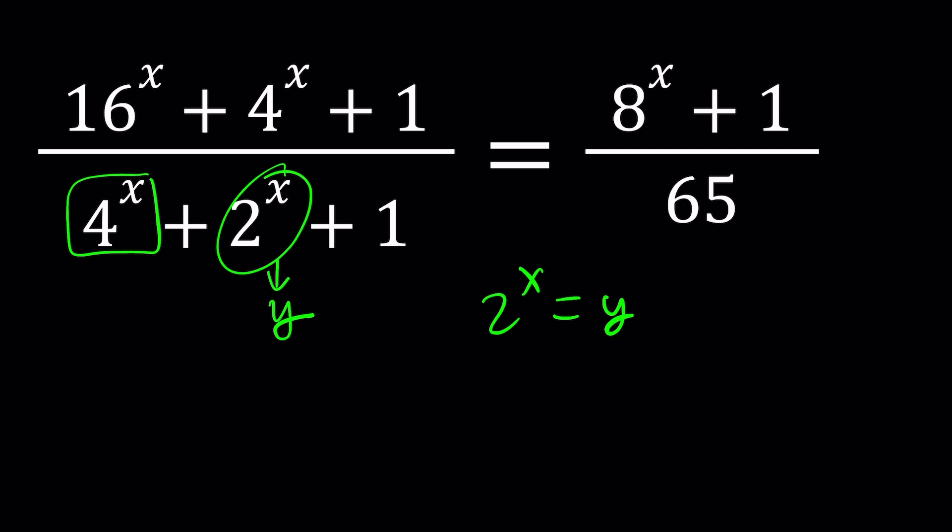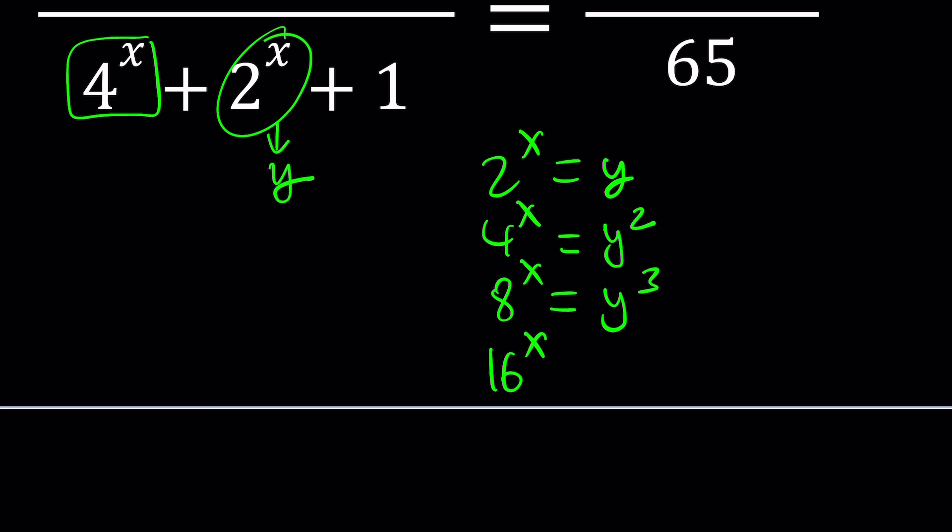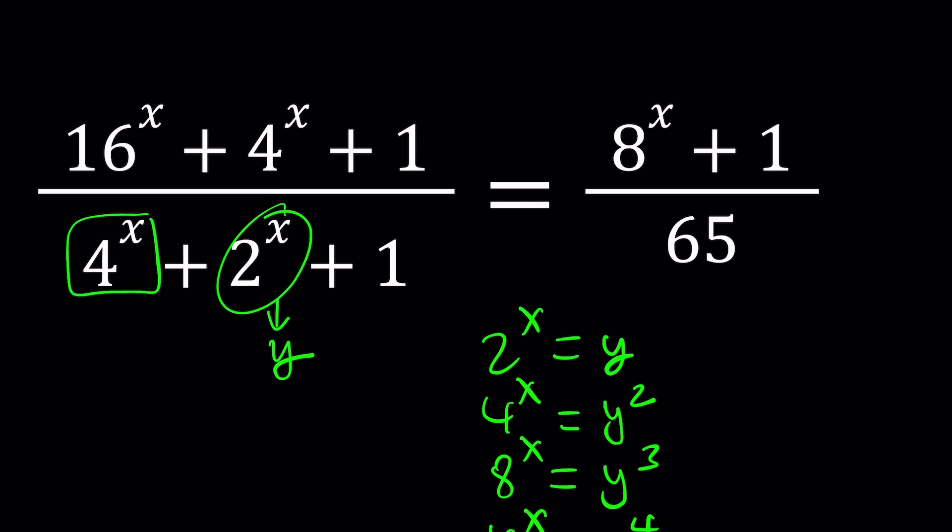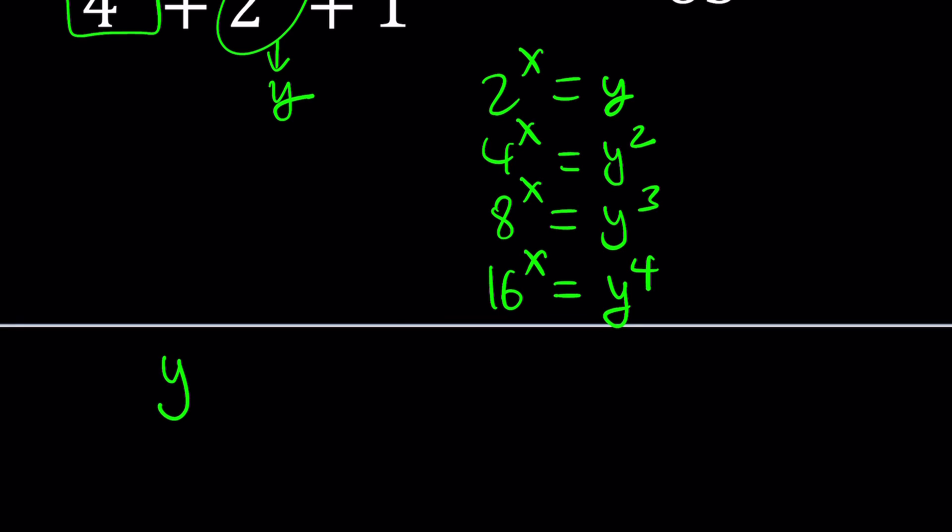For example, 4^x is 2 squared, so we can write this as y squared. And then 8^x is y cubed because 8 is 2 to the third power. And then 16^x should be y to the fourth. Let's replace them. You're going to get y^4 + y^2 + 1 divided by y^2 + y + 1, and that equals y^3 + 1 divided by 65.